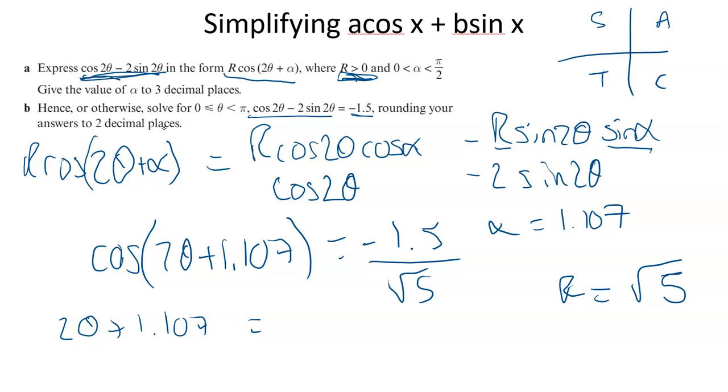We've got this as √5*cos(2θ + 1.107) equals -1.5. Now it's just solving - divide both sides by √5, inverse cos, then use cast diagram. We'll get two answers from that. Because it's 2θ plus a bit, we need to go up to 2π plus 1.1, so we can catch them all. I'm not going to do that bit.